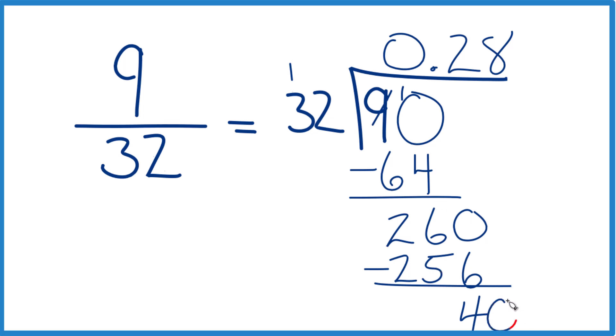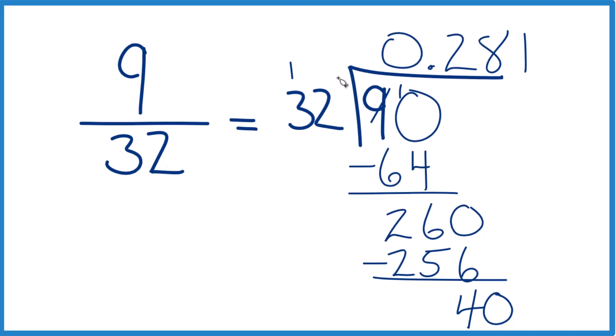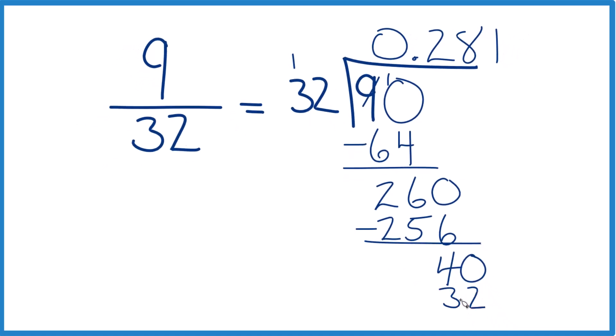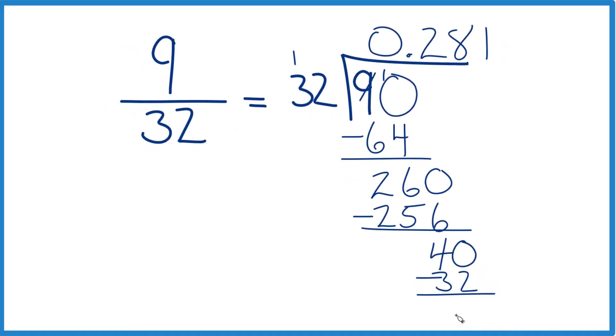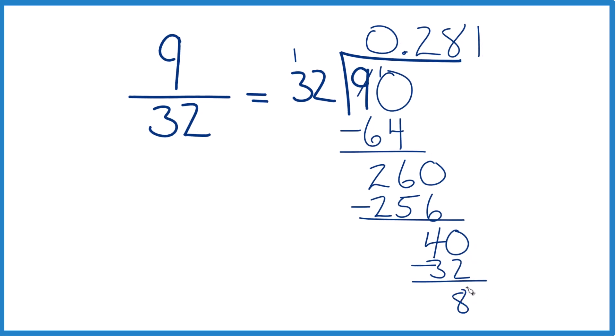32 doesn't go into 4. Call it 40. Move over a decimal point. And let's say 1 here, 1 times 32. That would work. And we end up with a remainder of 8. And we could just keep going, or we could round at 0.28.